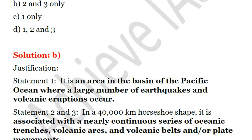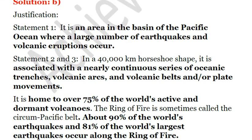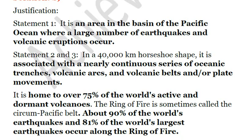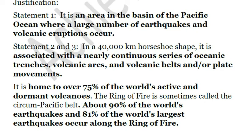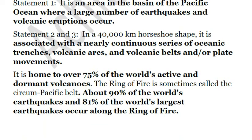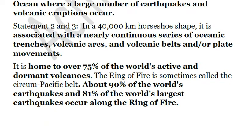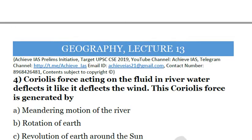The Ring of Fire is an area in the basin of the Pacific Ocean where large earthquakes and volcanic eruptions occur. It is a 40,000-kilometer horseshoe shape associated with a continuous series of oceanic trenches, volcanic arcs, volcanic belts, and plate movements. It is home to about 75% of the world's active and dormant volcanoes, and about 90% of the world's earthquakes and 81% of the world's largest earthquakes occur in the Ring of Fire.